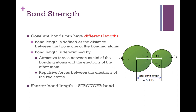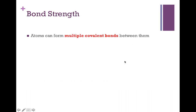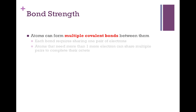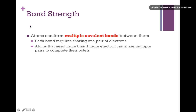In terms of bond strength, the shorter the bond length, the stronger the bond — it's a tighter link between the two atoms and harder to break. We can also discuss bond strength in the form of multiple covalent bonds. Each atom can form a single bond, but in some cases we can form double or even triple bonds. Each individual bond requires sharing one pair of electrons, and atoms that need more than one electron to complete their octet can use multiple bonding to get that job done.